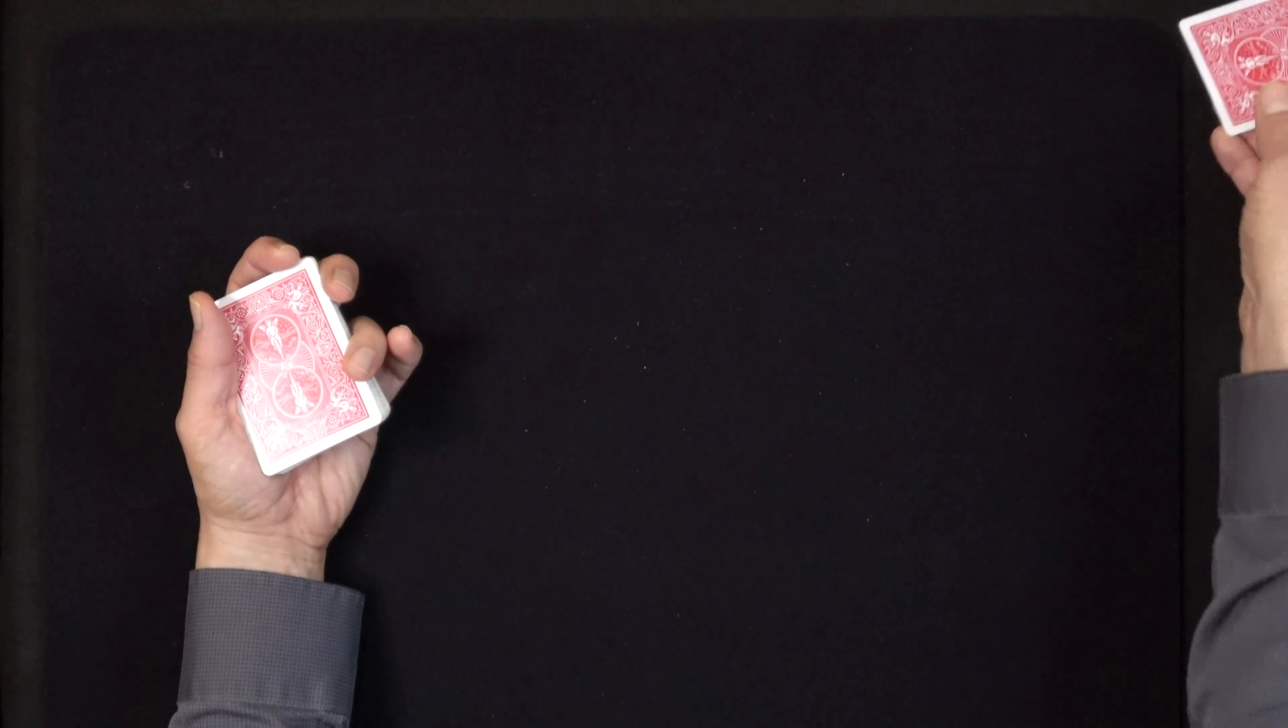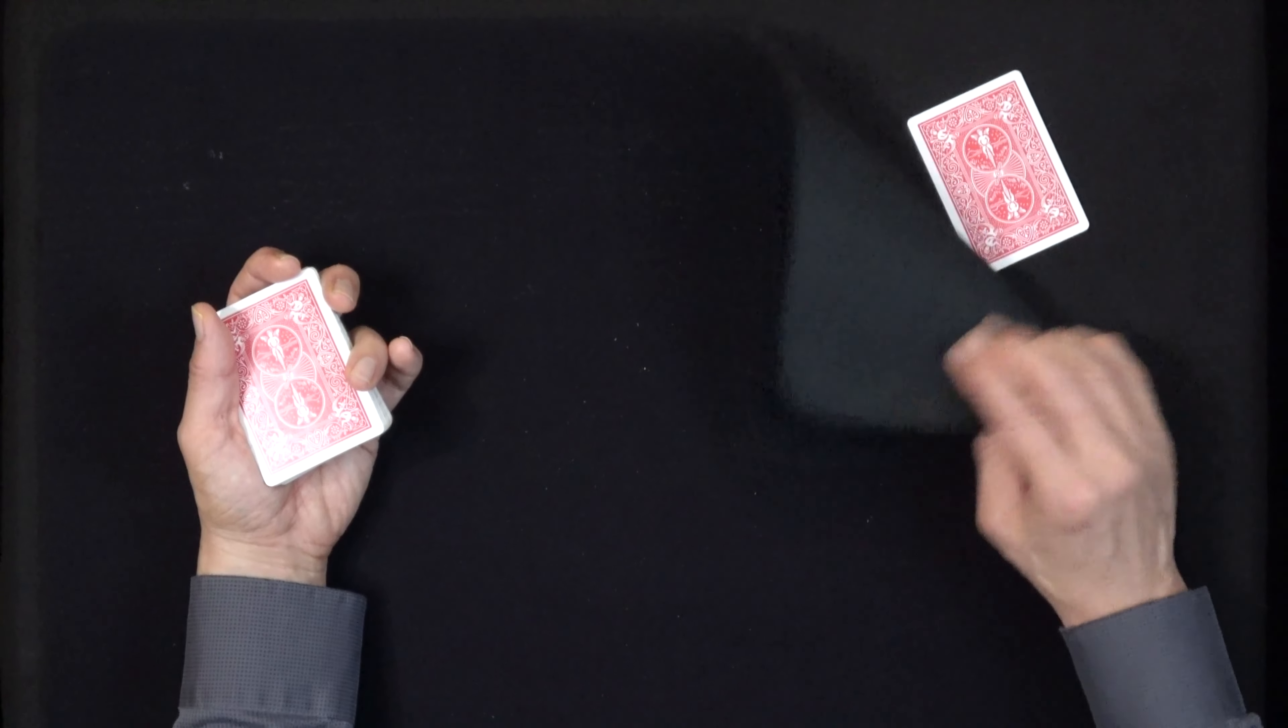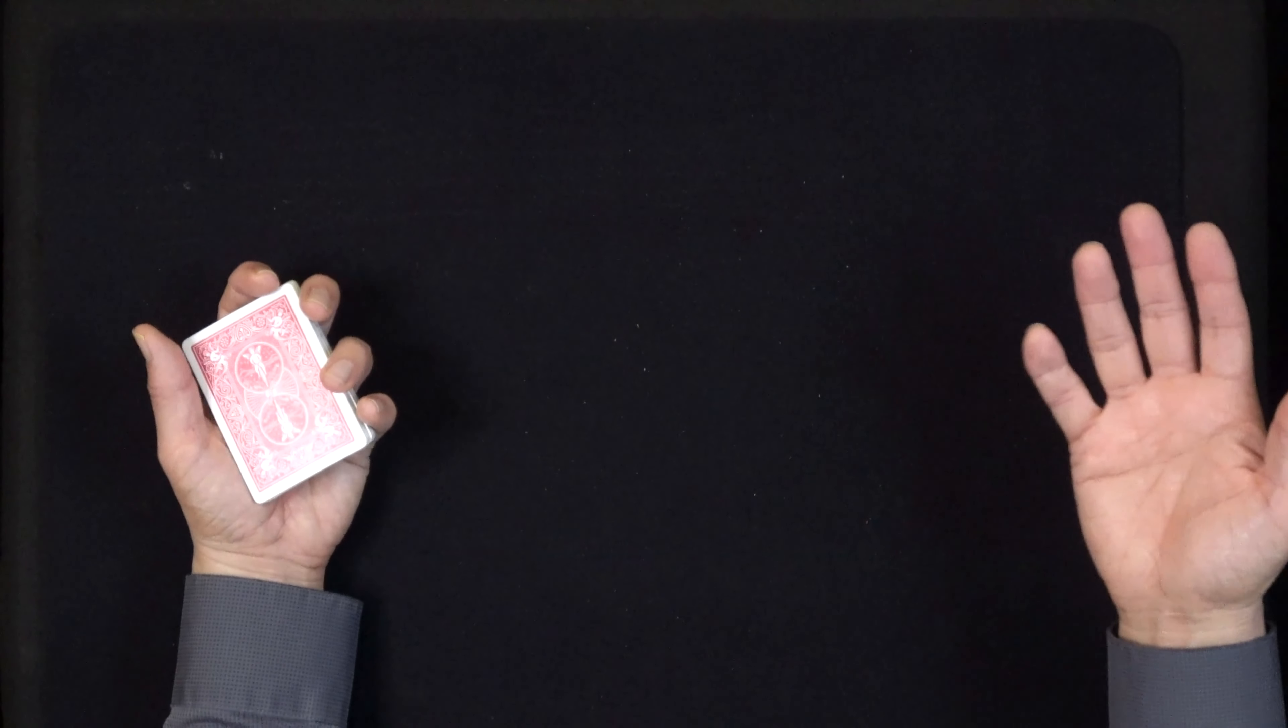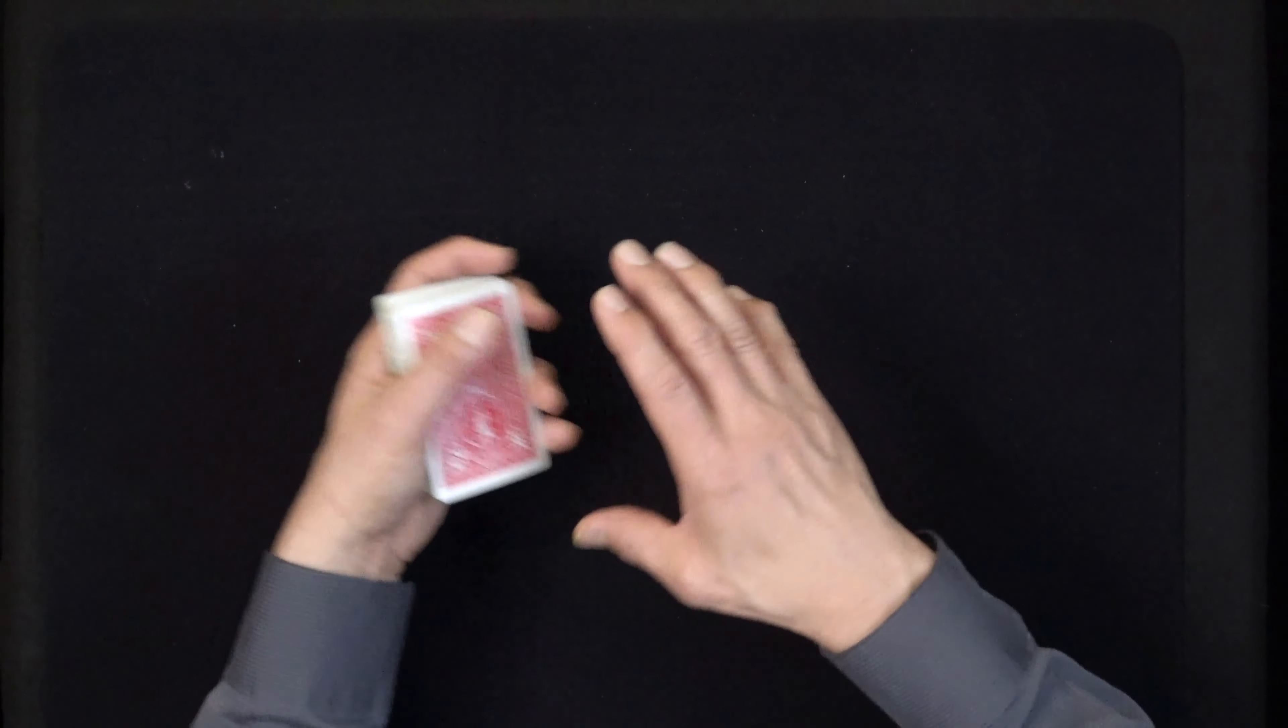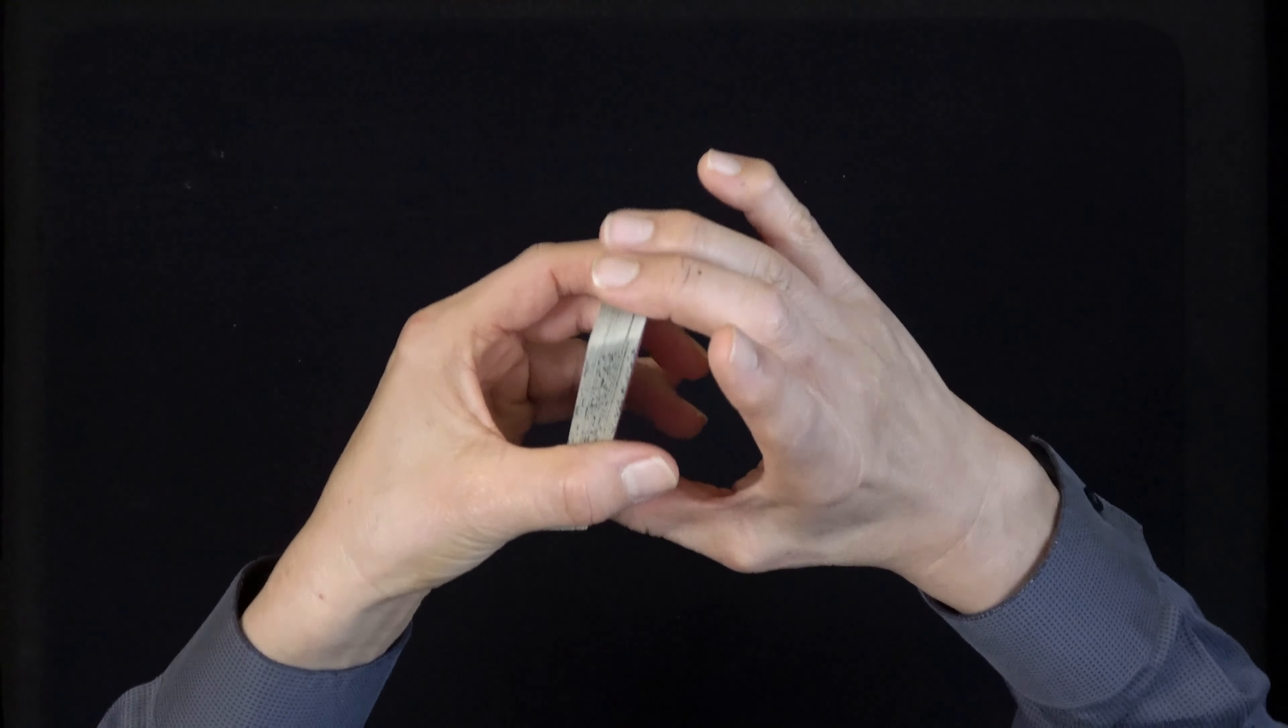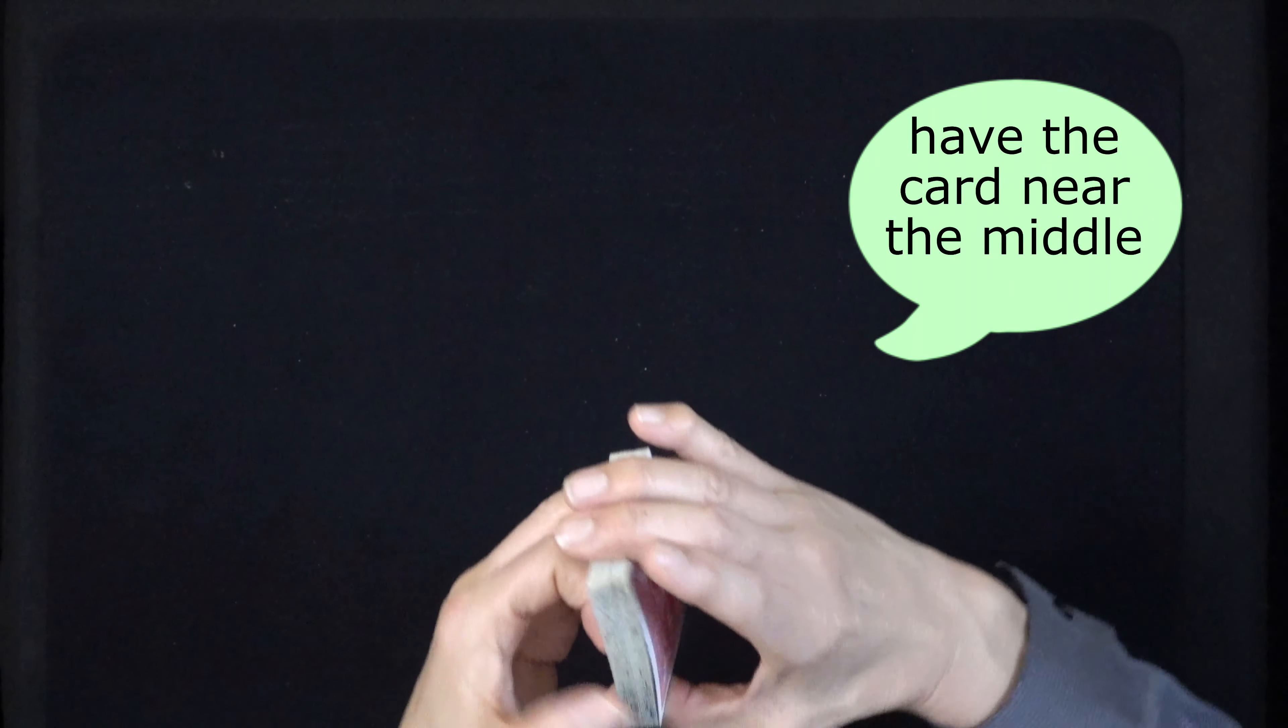Now there's two parts of this trick: the more difficult part and then the easy part, which would be the revelation. So let's just say you're going to do what I did. You're going to have the card travel under the tablecloth or under the placemat at a table. That's the easy part. The work's already done.